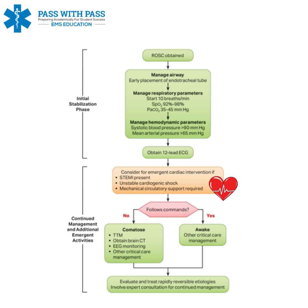Consider emergent cardiac intervention if we have a STEMI — which we would identify from the 12-lead ECG. We also consider it for unstable cardiogenic shock, which essentially means it's not a fluid problem. We have enough volume circulating, the patient isn't bleeding out, and they're not in a significant dysrhythmia or another form of shock like septic or anaphylactic. Once we've ruled out all those things and the patient's heart still isn't performing adequately, the patient is still hypotensive — we lean toward cardiogenic shock. The number one cause of cardiogenic shock is a myocardial infarction; if an MI isn't treated early, it will progress to cardiogenic shock and eventually death.